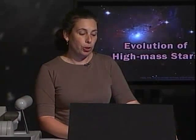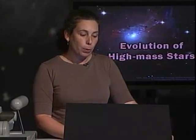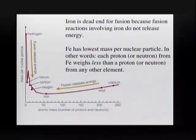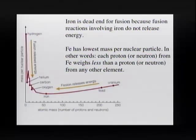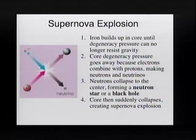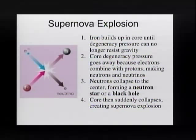You have this multiple shell burning. You probably remember this plot from before showing that you can only get energy out of the fusion of elements lighter than iron. When you get to iron, the iron builds up in the core until the degeneracy pressure of this iron cannot hold it anymore — cannot hold all this gravity.